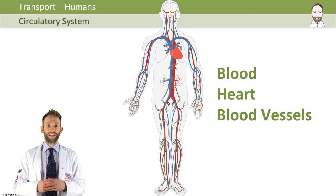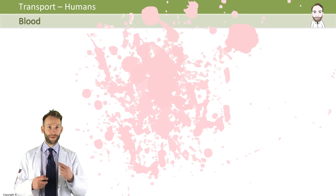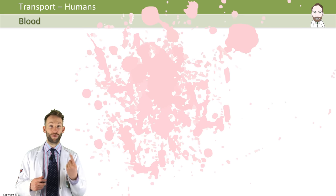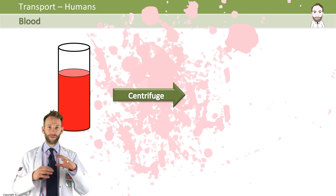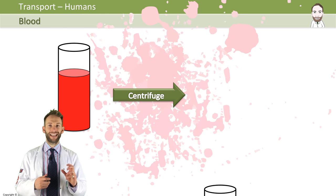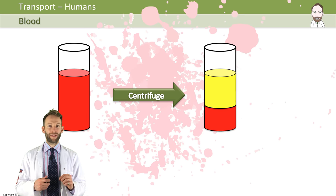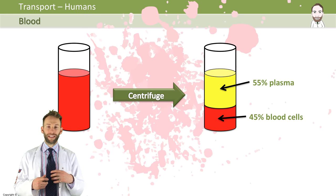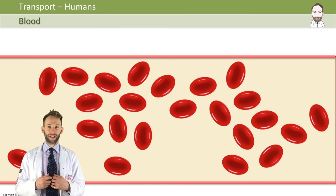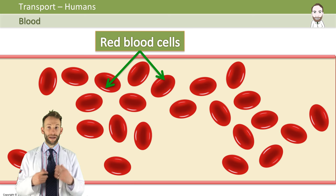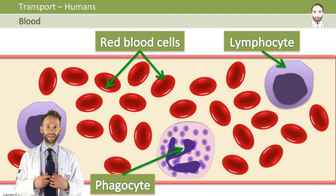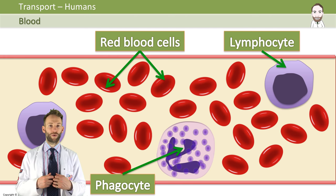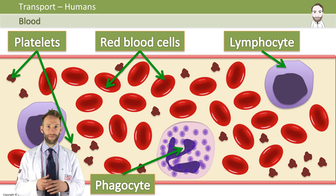Starting with blood — if you take a sample of blood and spin it really fast in a machine called a centrifuge, all the heavy things fly out to the end and the blood will actually separate into two clear distinct layers. The top layer is a very yellowy liquid called plasma — it's kind of straw coloured. The bottom layer contains all the actual blood cells. There are three different types: red blood cells, white blood cells (which are lymphocytes and phagocytes), and these little things called platelets. They are all suspended within the plasma.